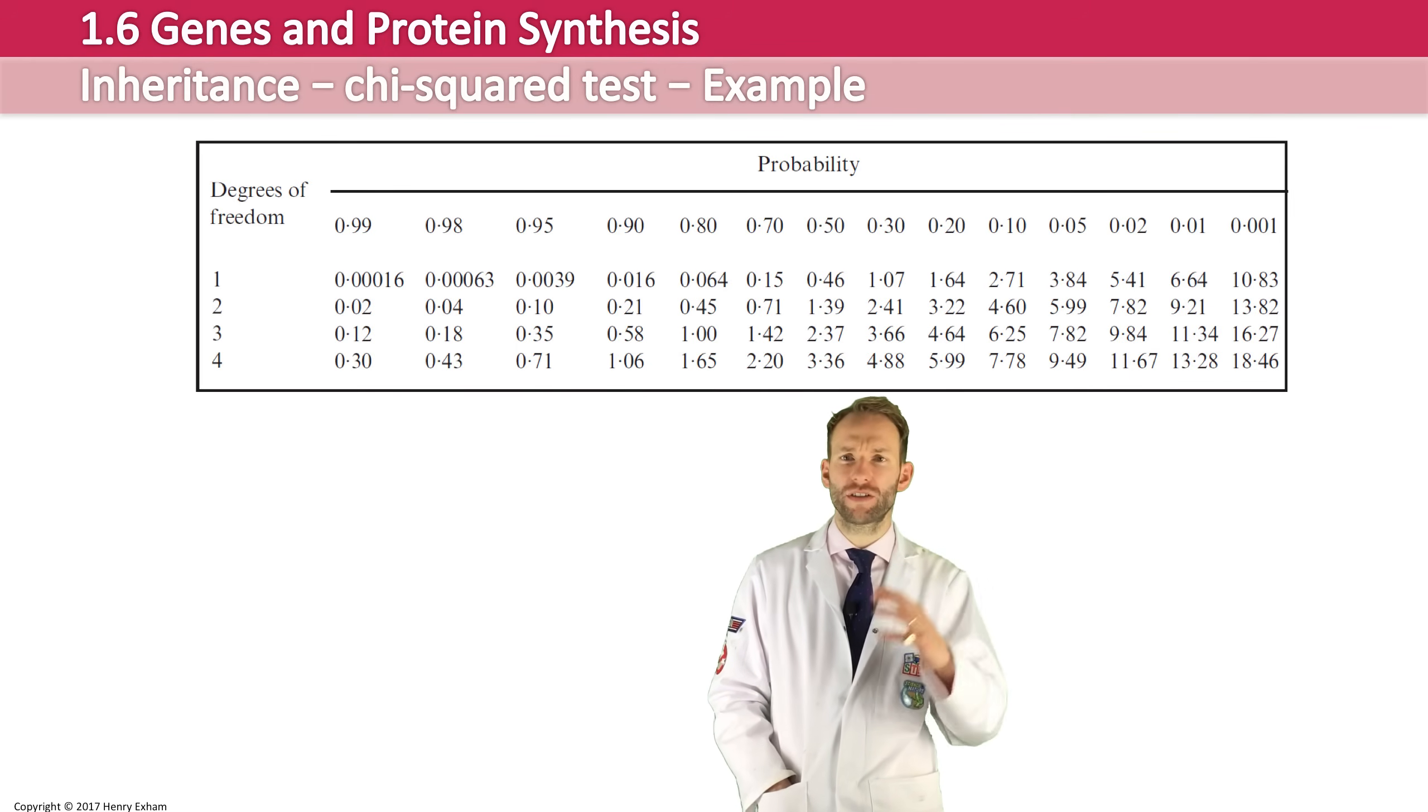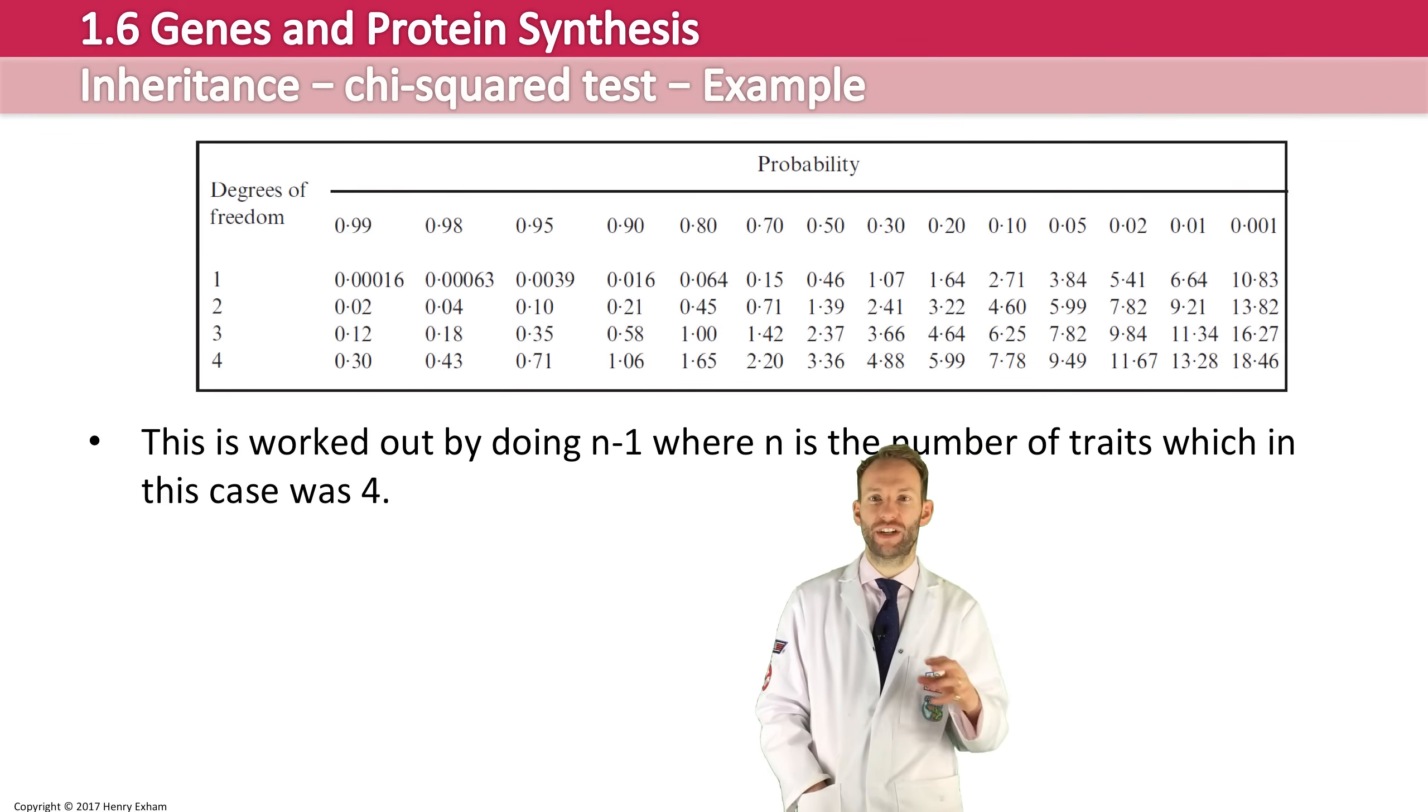But there's lots of little different numbers on here, different rows, different columns. We need to know exactly where we're looking at on the table. The first thing is to work out which row to look at. And to do that, we need to work out something called the degrees of freedom. Now, this is worked out by doing n minus 1, where n is the number of traits, which in this case was 4. There are four different traits possible.